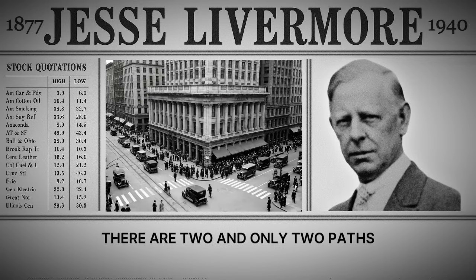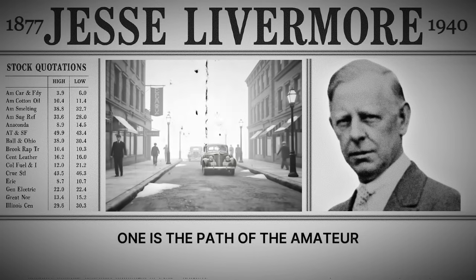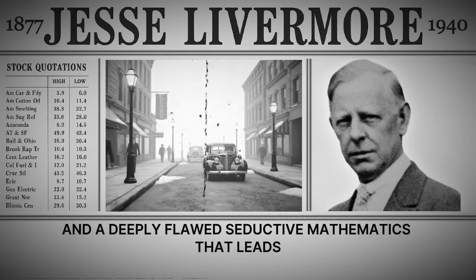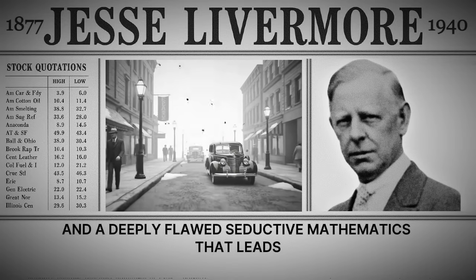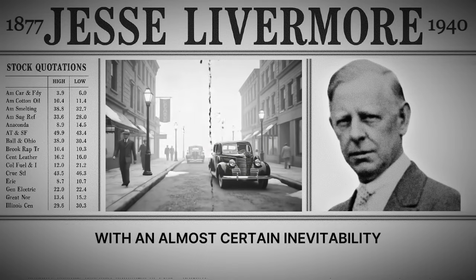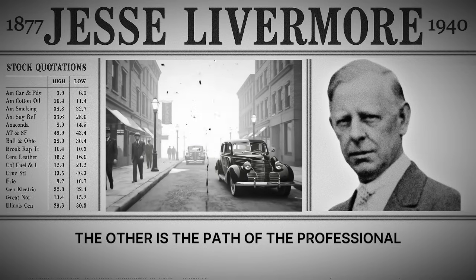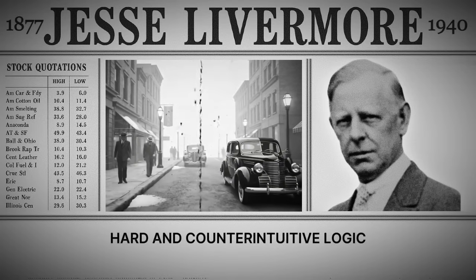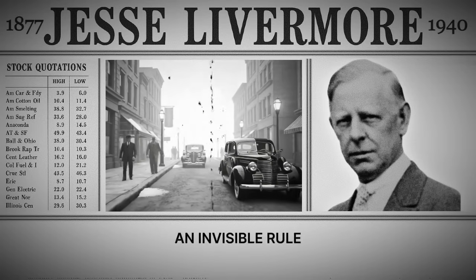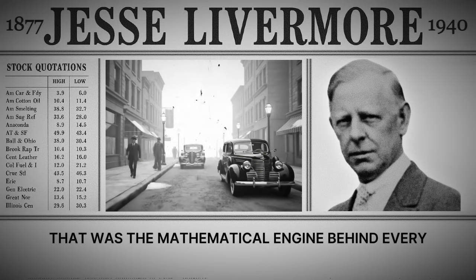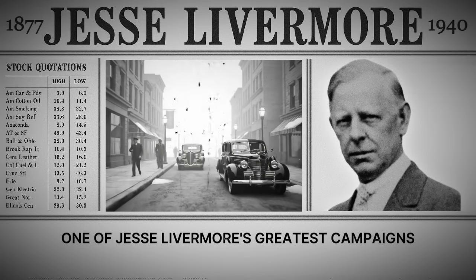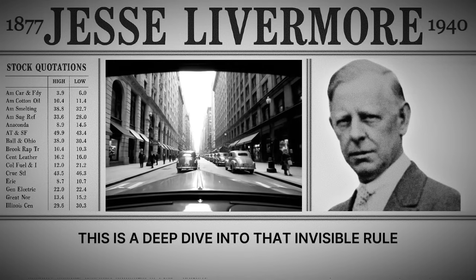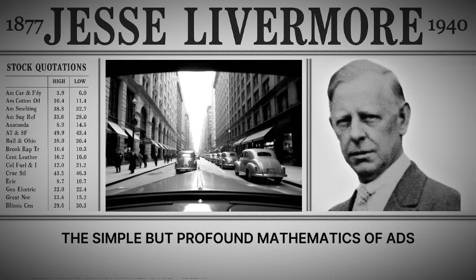There are two and only two paths. One is the path of the amateur, a path paved with hope, ego, and a deeply flawed, seductive mathematics that leads, with an almost certain inevitability, to the poorhouse. The other is the path of the professional, a path governed by a cold, hard, and counterintuitive logic — an invisible rule that was the mathematical engine behind every one of Jesse Livermore's greatest campaigns. This is a deep dive into that invisible rule: the simple but profound mathematics of ads.